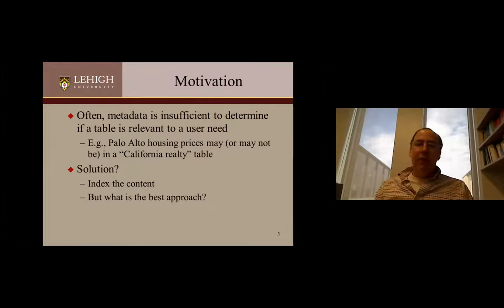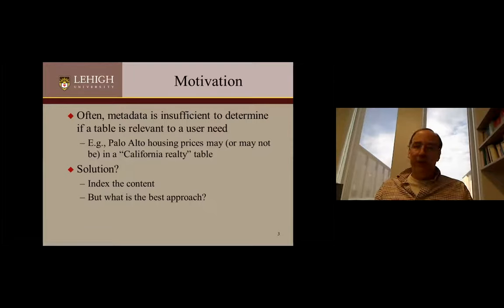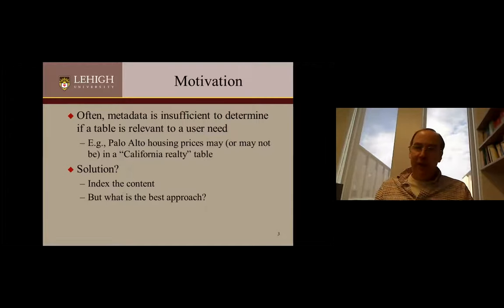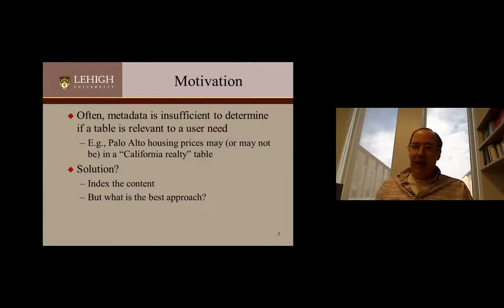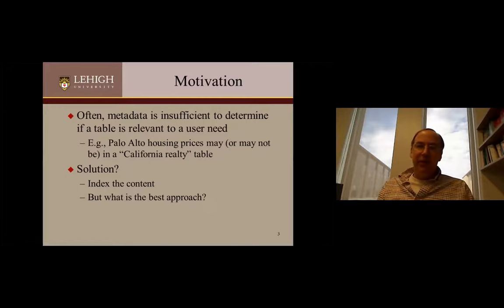Often metadata is insufficient to determine if a table is relevant to a user need. For example, if somebody is looking for Palo Alto housing prices, there might not be an actual table called Palo Alto housing prices. It might be in a California table and Palo Alto is just one row or some subset of rows. Unless the metadata lists all cities in California, you're probably not going to find it if you only index the metadata. So we believe it's really important that for data set search we index not just metadata, but also find some way to index the content.